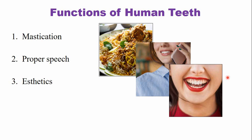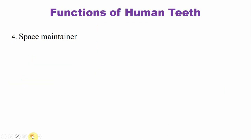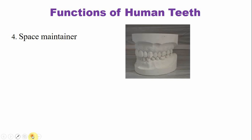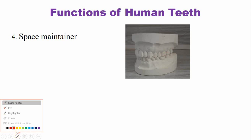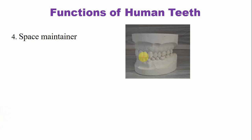Imagine in this picture if the teeth are missing — the person looks very unaesthetic. The teeth also maintain the lower facial height together with the alveolar bone. When the teeth are lost, the nose and the chin come close to each other. Human teeth also act as a space maintainer — they prevent unnecessary movement of the adjacent teeth or abnormal tooth movement of the adjacent teeth as well as the opposing teeth.